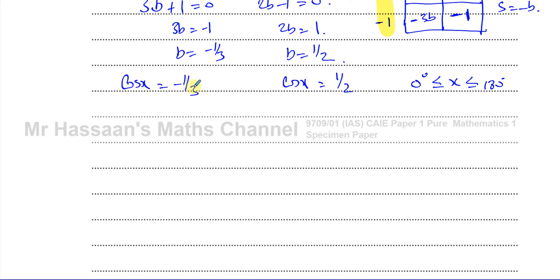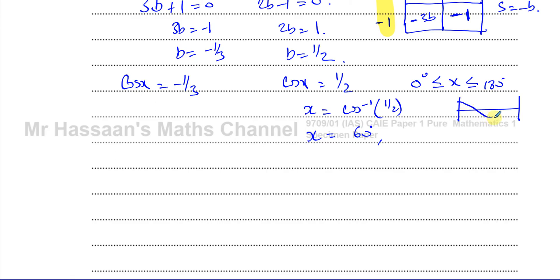Starting with the easier one: x equals inverse cosine of one half. The inverse cosine of one half is 60 degrees. The cosine curve is symmetric, so the second angle would be 360 minus 60 equals 300 degrees, but that's outside our range of 0 to 180. So the only solution here is x equals 60 degrees.